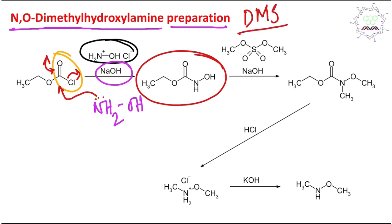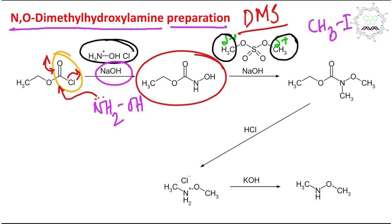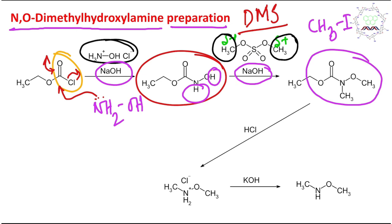DMS can be considered equivalent to methyl iodide but is easier to handle due to its low volatility. The methyl groups are delta-positive and electrophilic, and one molecule of DMS can serve as a source of two equivalents of methyl electrophile. These two methyl groups stepwise replace the two hydrogens on oxygen and nitrogen respectively, with sodium hydroxide acting as base. Further methylation does not occur because the lone pair is in conjugation with the carbonyl and is not available for further alkylation.